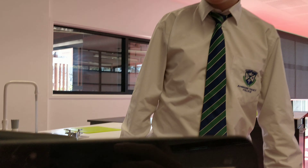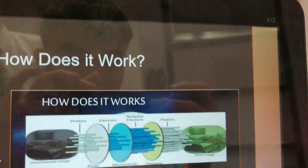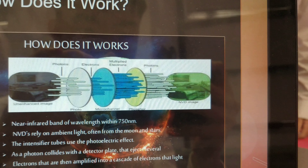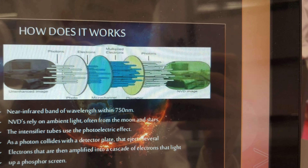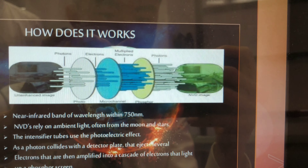Night vision. How does this work? Night vision goggles work by amplifying the existence of photons. A lens directs photons onto a photoelectric plate and the electrons are then accelerated onto a channel plate with many